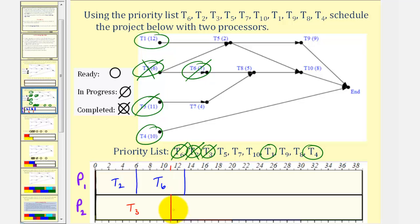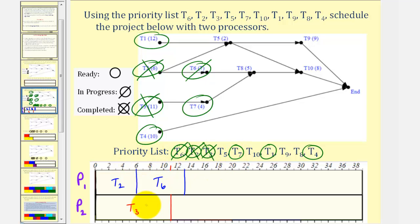After eleven hours, task three is complete, so we mark task three as complete. Notice task seven is now ready. Task seven is the highest priority ready task, which is now assigned to processor two. Task seven takes four hours, and eleven plus four is fifteen. Task seven is now in progress.